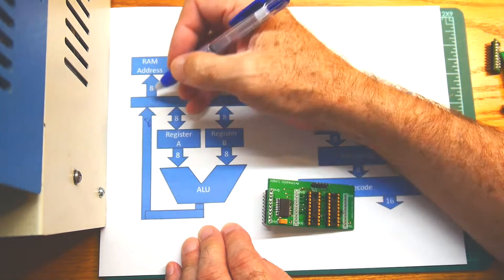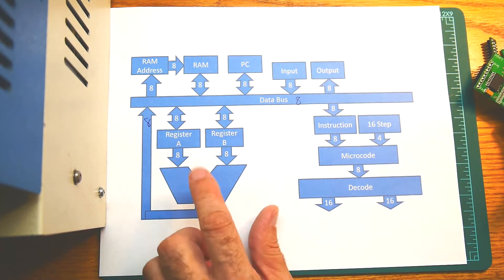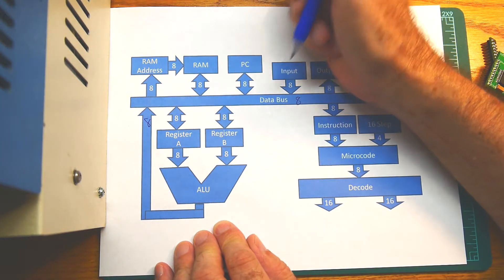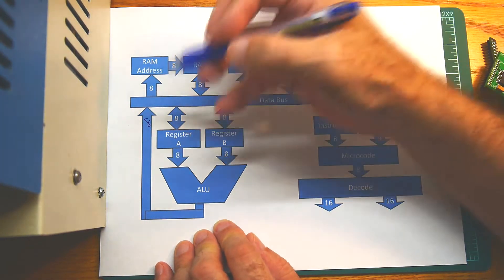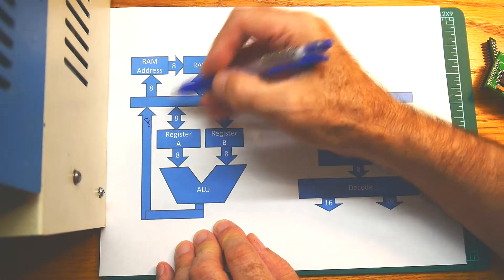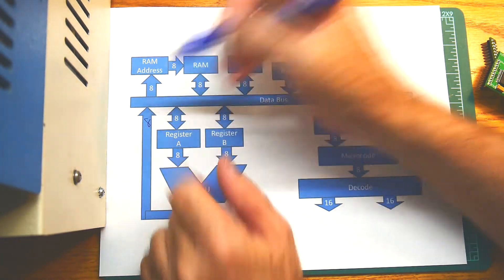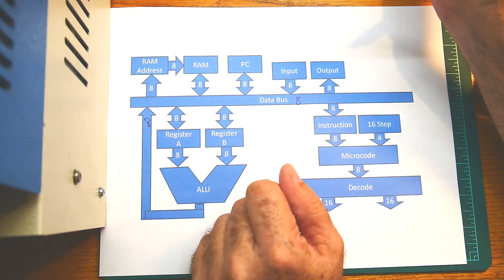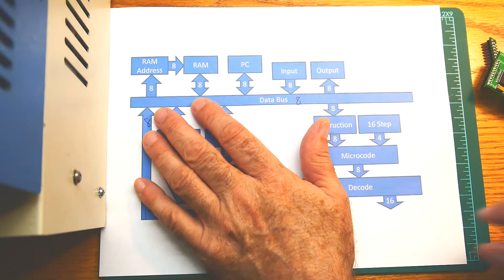So there's an 8-bit line that comes out. This is an 8x8 ALU. We put that back on the bus. That's read-only. These are read-write, that's why there's a double arrow. This is read-only. We have the RAM.